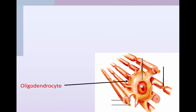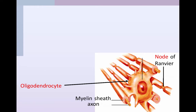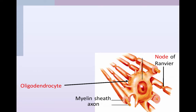Oligodendrocytes are the cells in the central nervous system responsible for myelinating the axons of neurons found there. Myelinated axons aren't entirely encased in myelin — there are bare spots known as nodes of Ranvier, which become very important when we talk about how a signal passes down an axon. The principal function of oligodendrocytes is to produce the myelin sheath, and one oligodendrocyte can insulate up to as many as 30 axons from different neurons.